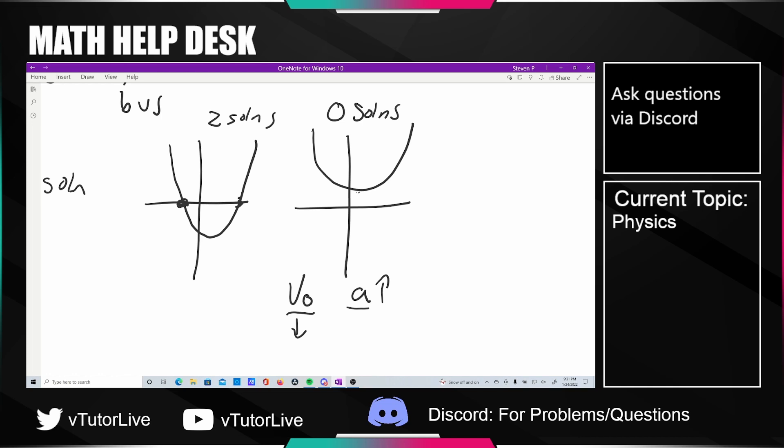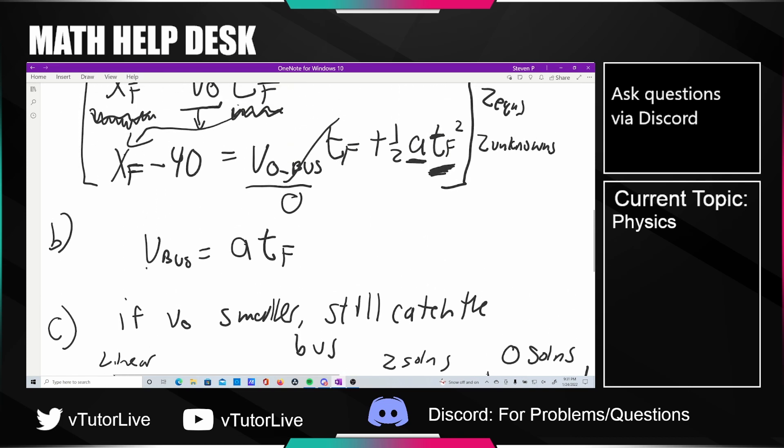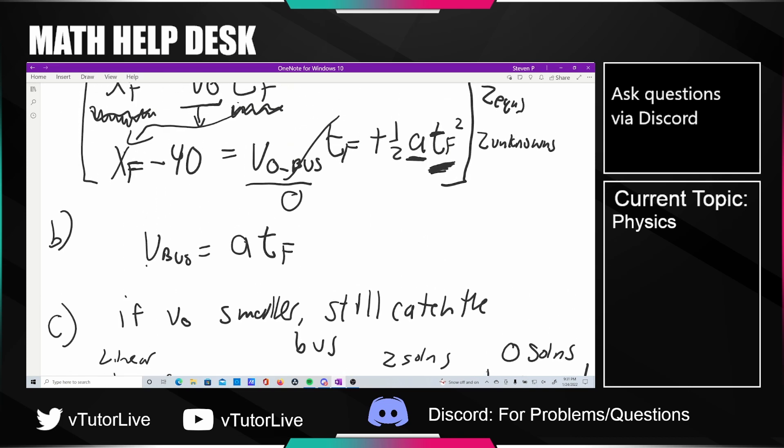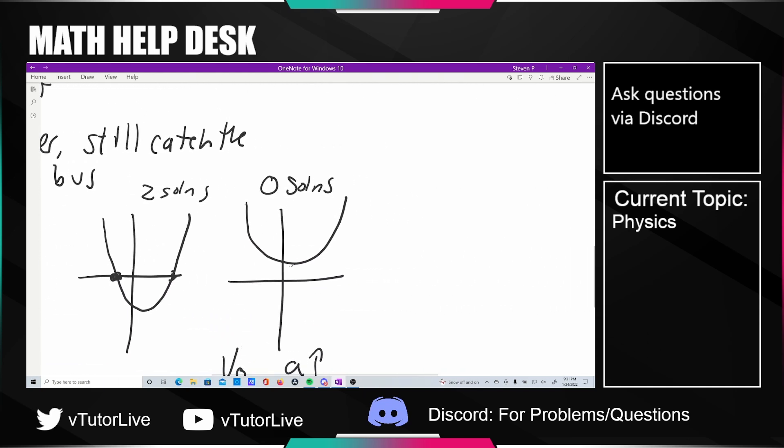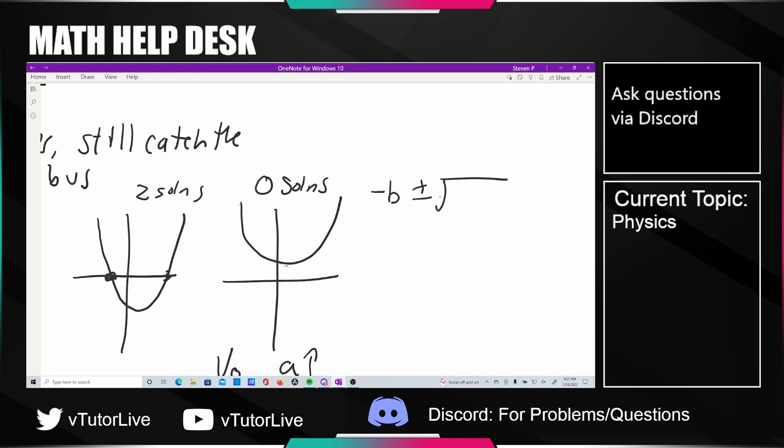In terms of the actual quadratic equation, how do you tell from a quadratic equation how many solutions there are? Can somebody remind me, just take a look at the quadratic formula. Negative b plus or minus the square root of b squared minus 4ac over 2a. What's the criteria for zero, one, or two solutions?